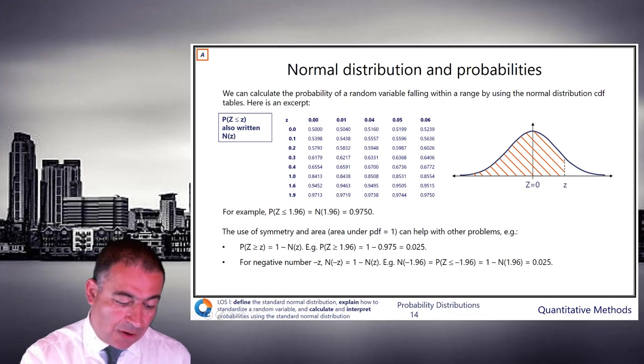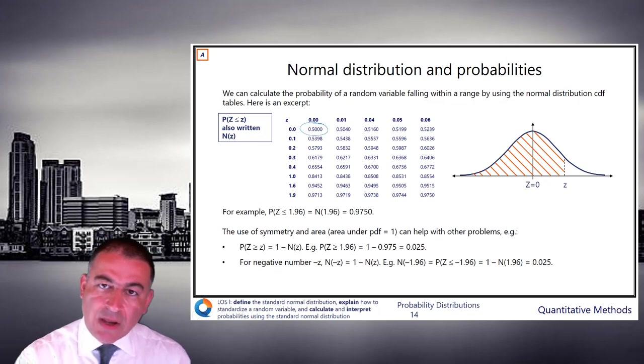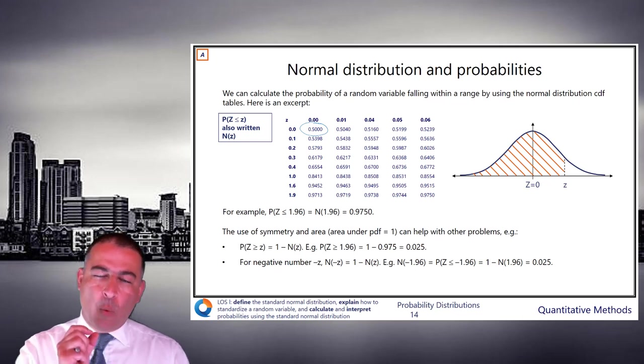And so you can see the 0.5 here. What else do we know? We know z equals 1.96. What's the CDF at 1.96?